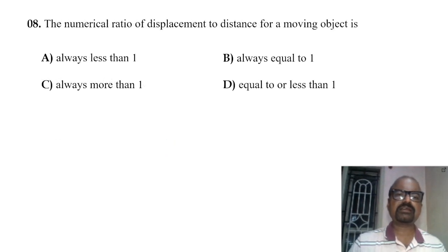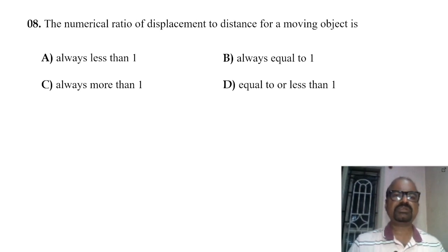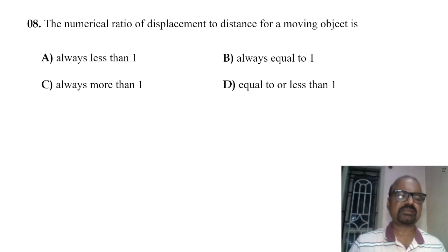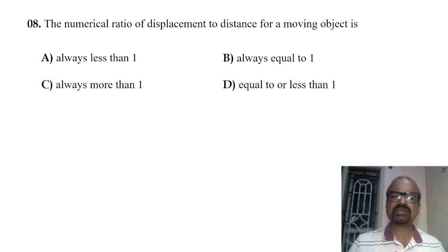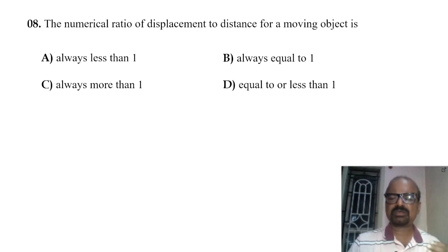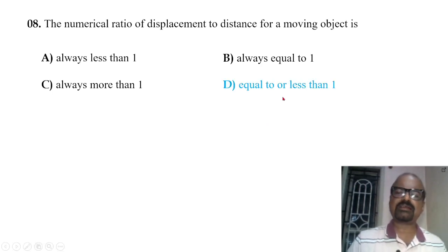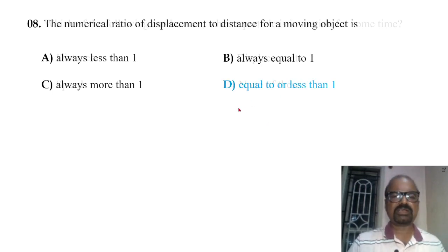The numerical ratio of displacement to distance for a moving object: displacement divided by distance may be equal to or less than one. So the ratio is always equal to or less than one — that is the correct answer.